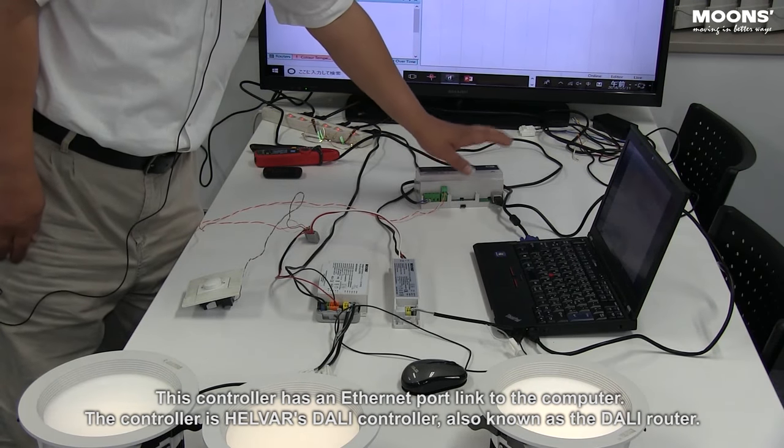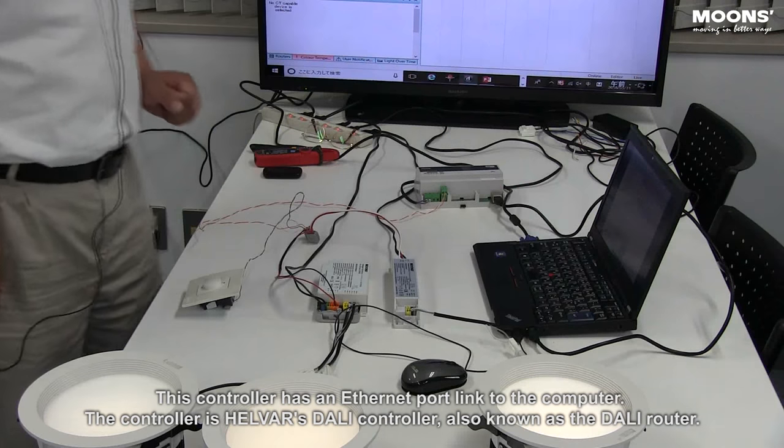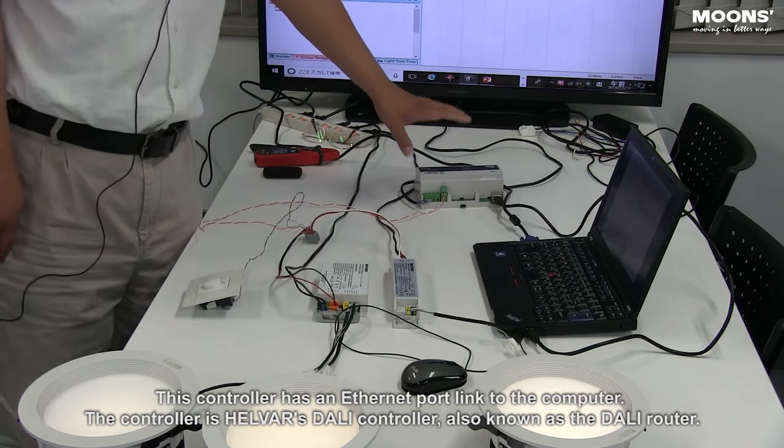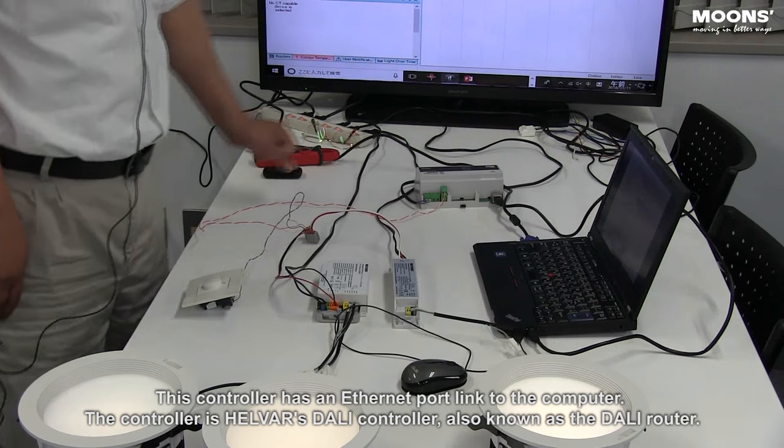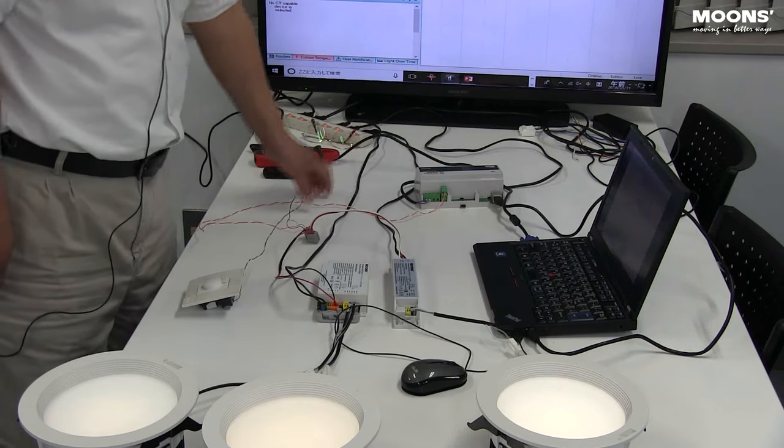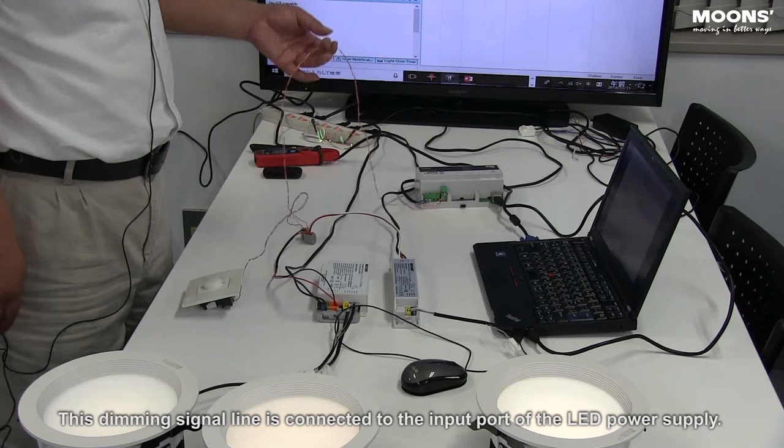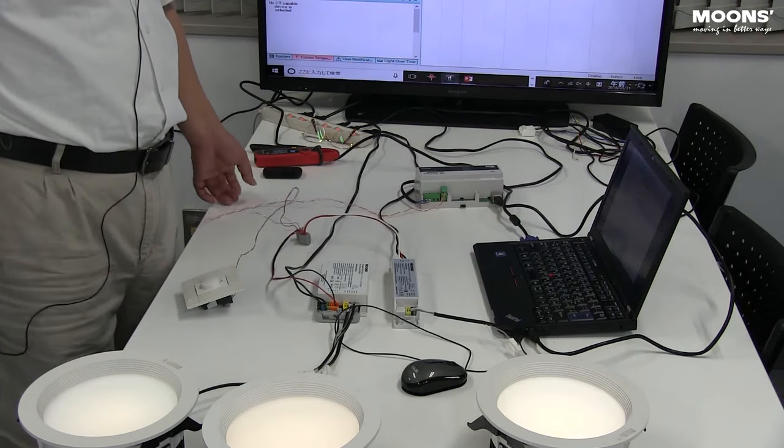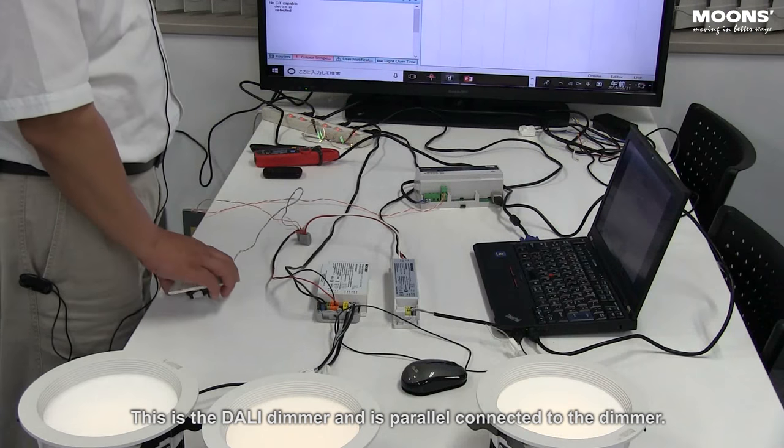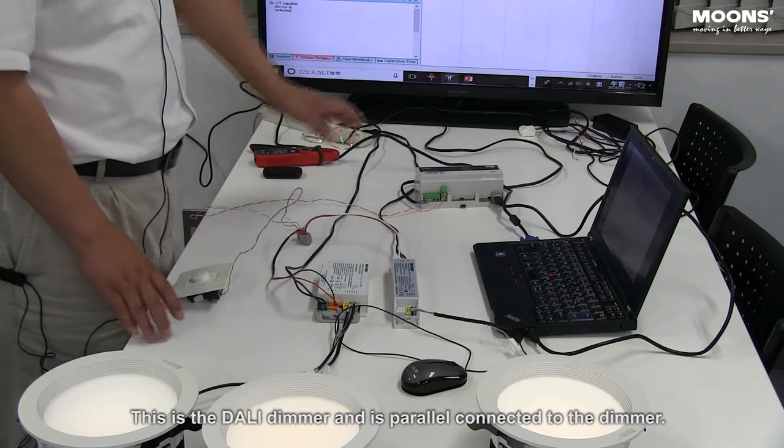This controller has an ethernet port, linked to the computer. The controller is Helver's DALI controller, also known as the DALI router. This dimming signal line is connected to the input port of the LED power supply. This is the DALI dimmer and is parallel connected to the dimmer.